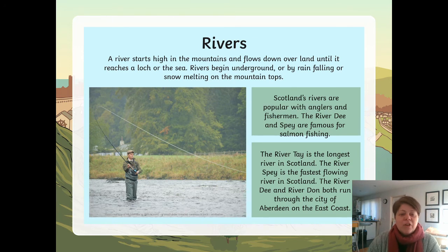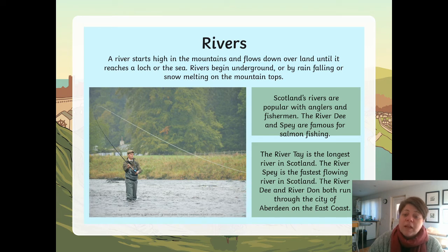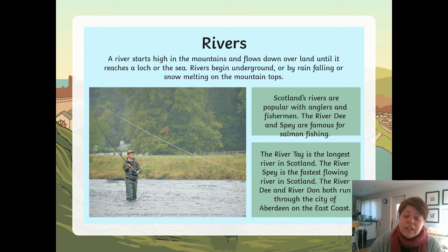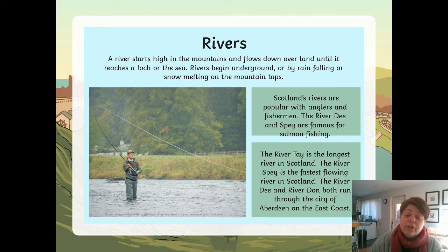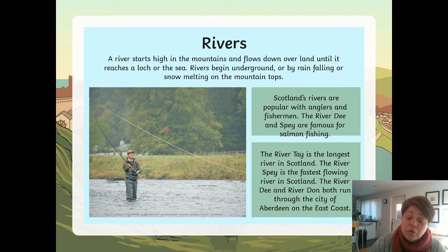A river starts high in the mountains and flows down over land until it reaches a loch or the sea. Rivers begin underground or by rain falling or snow melting on the mountain tops. Scotland's rivers are popular with anglers and fishermen. The rivers Dee and Spey are famous for salmon fishing. The river Tay is the longest river in Scotland. The river Spey is the fastest flowing, and the rivers Dee and Don both run through the city of Aberdeen on the east coast.